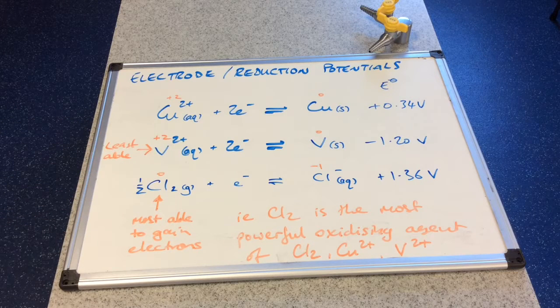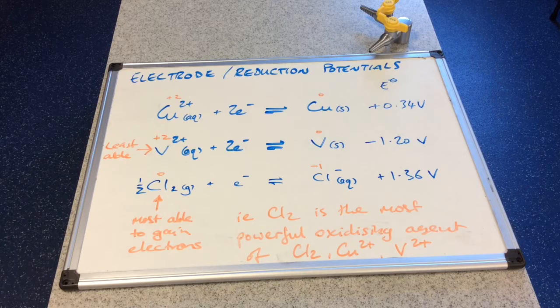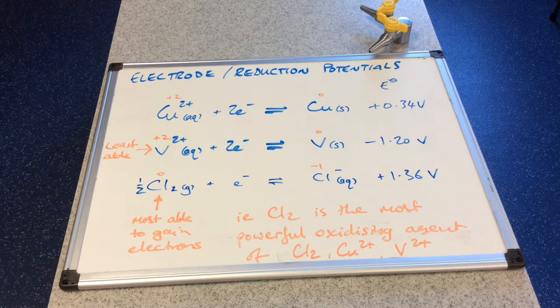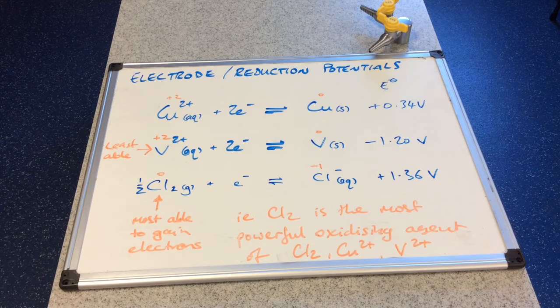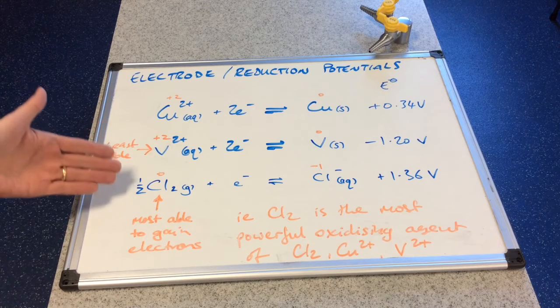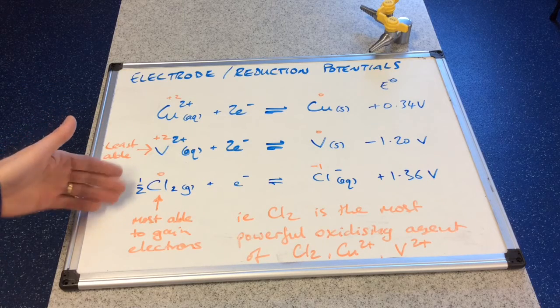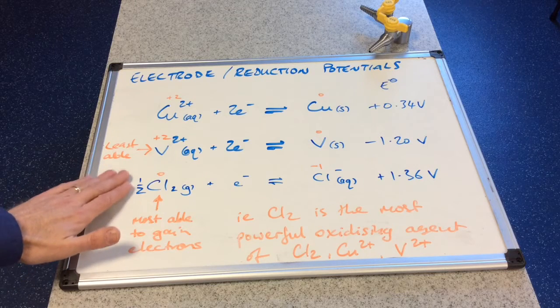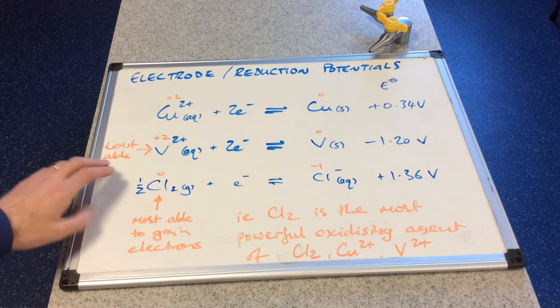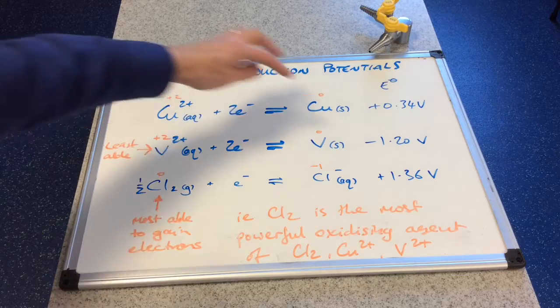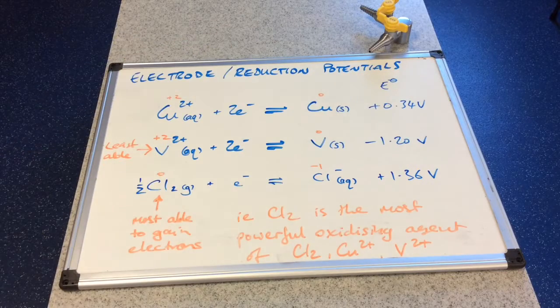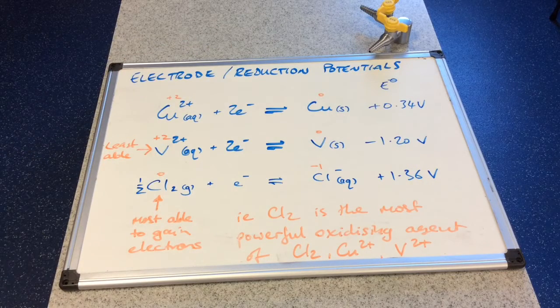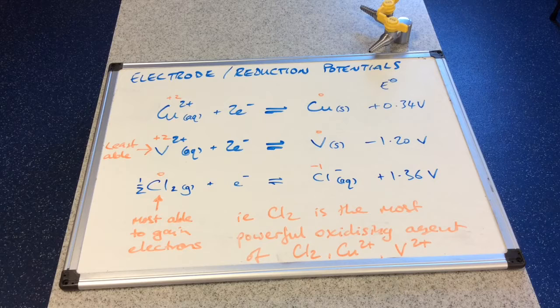To get the overall equation. And remember when you balance half equations, the important thing is to get the electrons to cancel. And you have to multiply some by a different number to get the electrons equal. The important thing in standard electrode potential chemistry, you don't multiply the voltage. That always stays the same as it's given in the question.